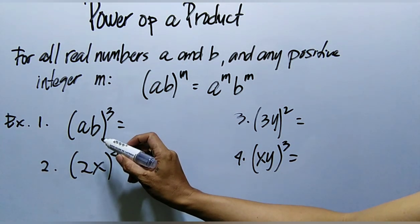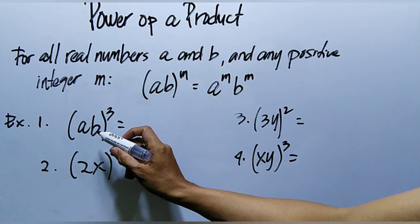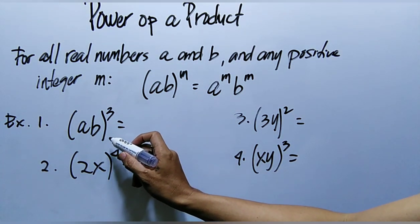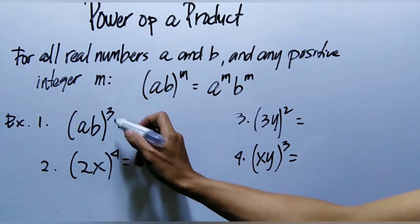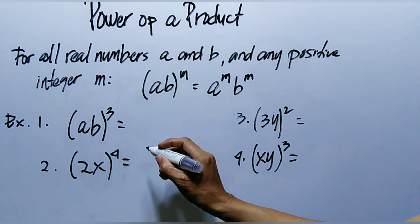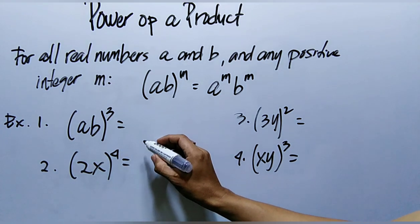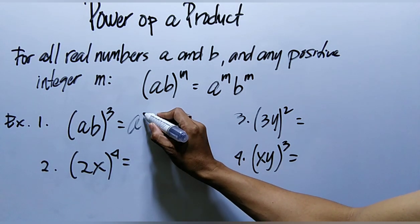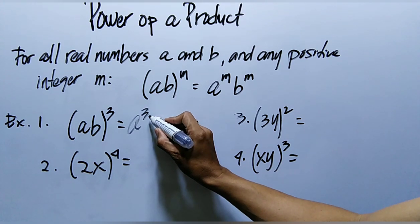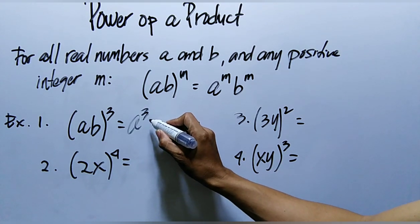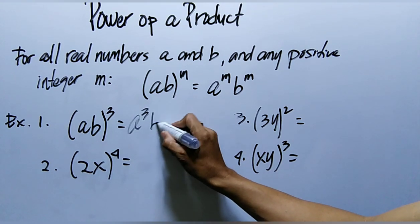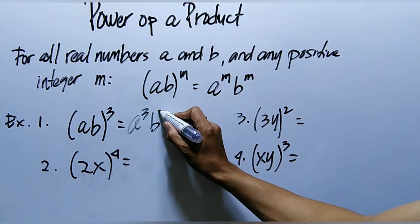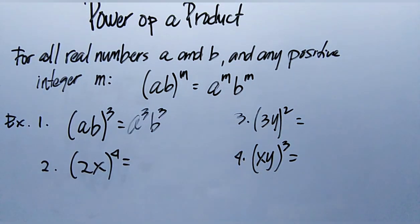Let's have Example 1: the quantity of ab raised to the power of 3. So we raise a to the power of 3, or cube it, then b raised to the power of 3.